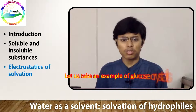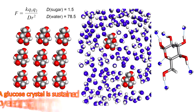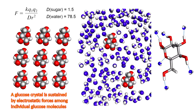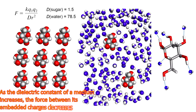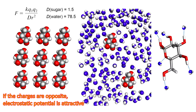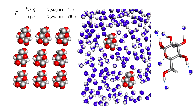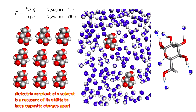Let us take an example: glucose crystals. When you add some sugar in water, it dissolves. Glucose crystals are sustained by high electrostatic forces among individual glucose molecules. The electrostatic force between any two charged particles Q1 and Q2 separated by a distance R is given by Coulomb's law. D here is the dielectric constant of the medium. Thus, as the dielectric constant of the medium increases, the force between the eminent charge decreases.